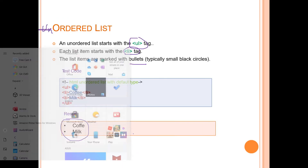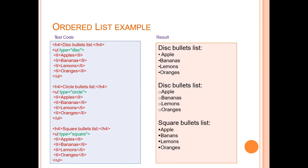Then moving on to the PPT, a different example has been taken. This is not a bullet - this is called a circle. This is the disk. You can see how we can differentiate one bullet from another easily. This is called a circle, and this is called disk. You can easily observe how items would be displayed using the different bullet formats. This is also unordered, not ordered.